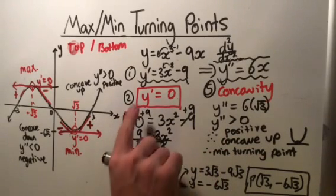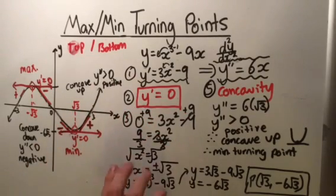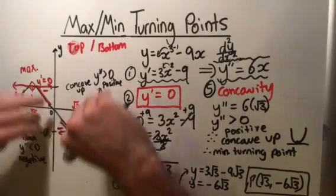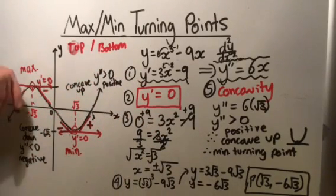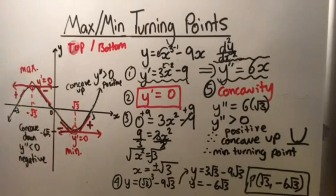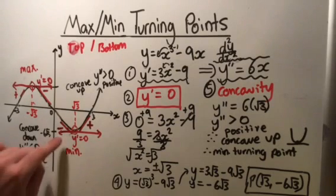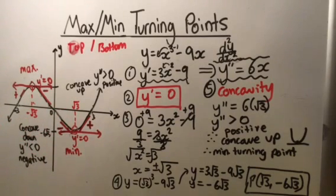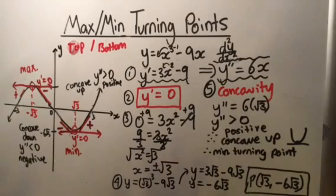So there you go: the first derivative tells us the gradient, and we want to know when the gradient is zero to find a turning point. The second derivative tells us the concavity — which way the curve is bending. If it's concave down, the second derivative is negative; if it's concave up, the second derivative is positive. That's how you find whether your turning point is a minimum or a maximum. Hope that helps — this also introduces you to the concept of the second derivative, and we're going to look more at that in the next video. Please subscribe and share, see you later.